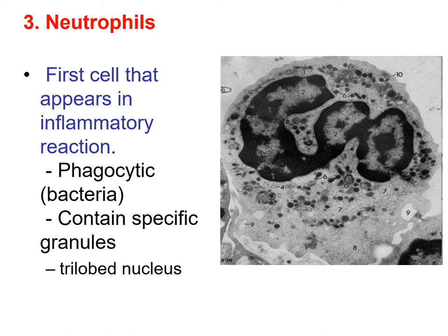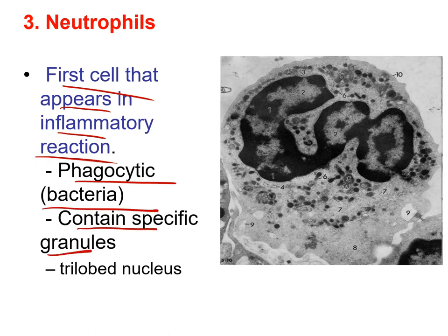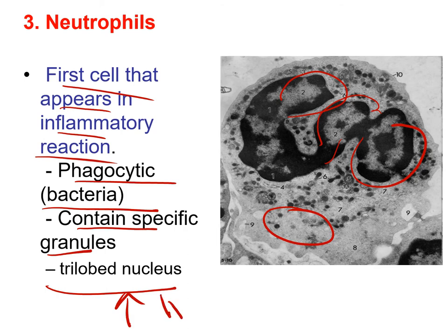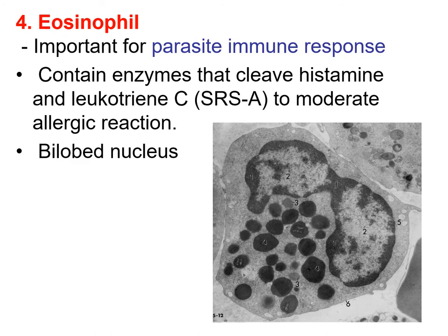The third cell we have is the neutrophil. This is the first cell that appears in the inflammatory reaction — whenever we have inflammation or infection, the neutrophil is the first cell to reach the area. These cells are very important in phagocytosing bacteria and also contain granules. One of the most important features of neutrophils is that they have a trilobed nucleus — the nucleus is not spherical but has three lobes.